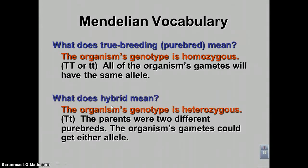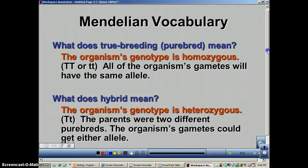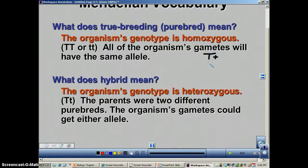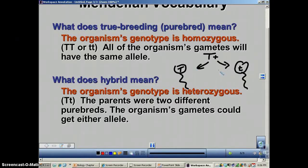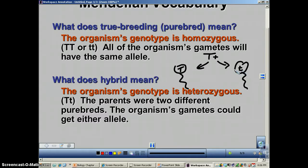What if you're heterozygous? Then you are called a hybrid. Hybrid and heterozygous mean the same thing. A heterozygous individual will not breed true when producing gametes. When it goes through meiosis, half the gametes get the big T and the other half get the little t. You don't know which allele you'll get — it's a 50-50 chance. This is a tall plant, but it can pass on the gene for short. It is not a purebred; it is a hybrid.